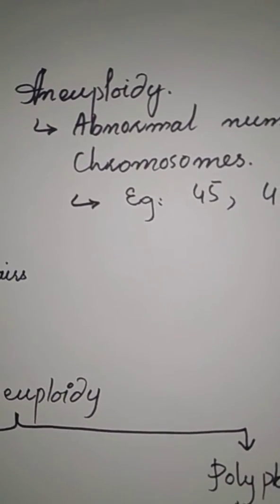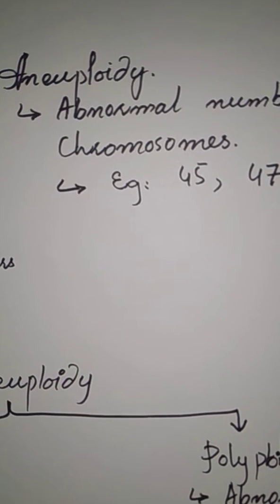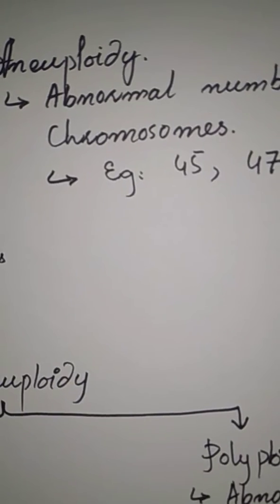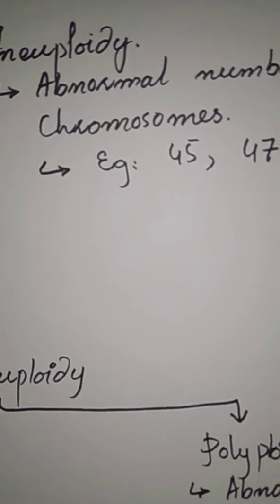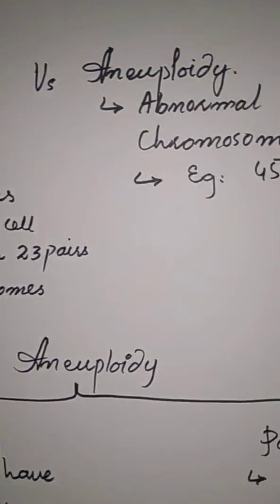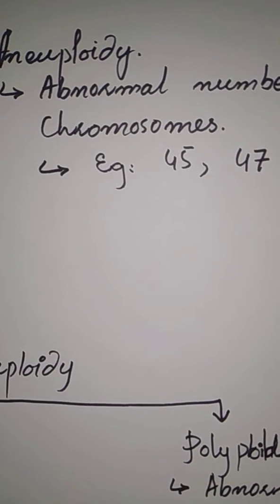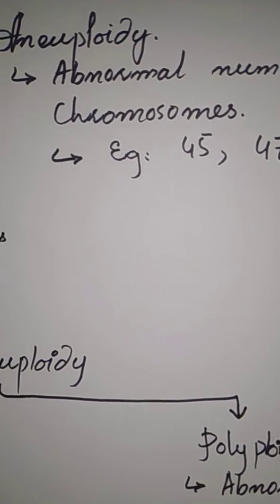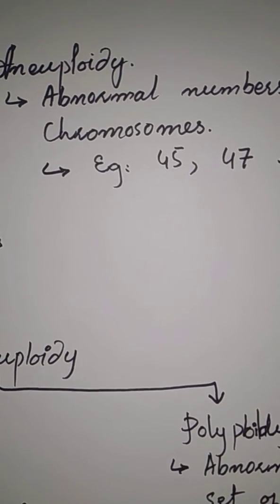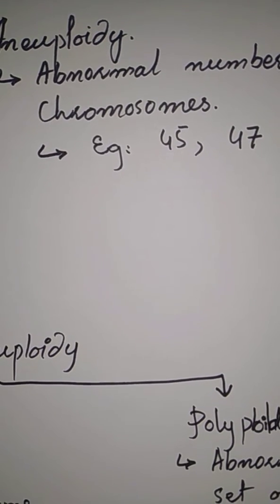Aneuploidy means an abnormal number of chromosomes — the normal number is disrupted. In human beings we normally have 46 chromosomes, but in aneuploidy we observe 45, 47, and so on. This means abnormalities are observed in the chromosome number, and this condition is called aneuploidy.